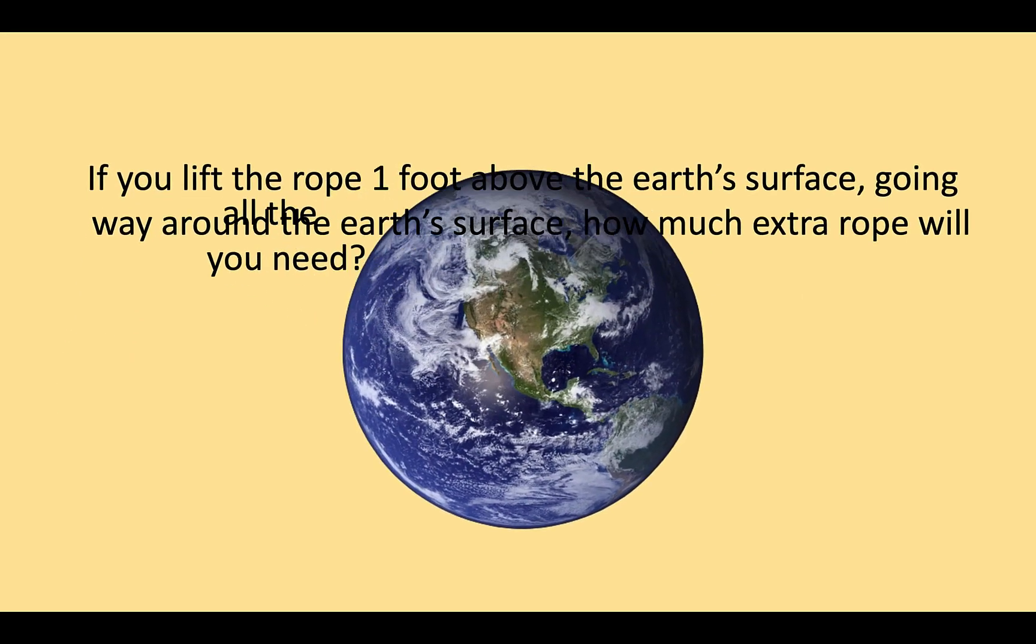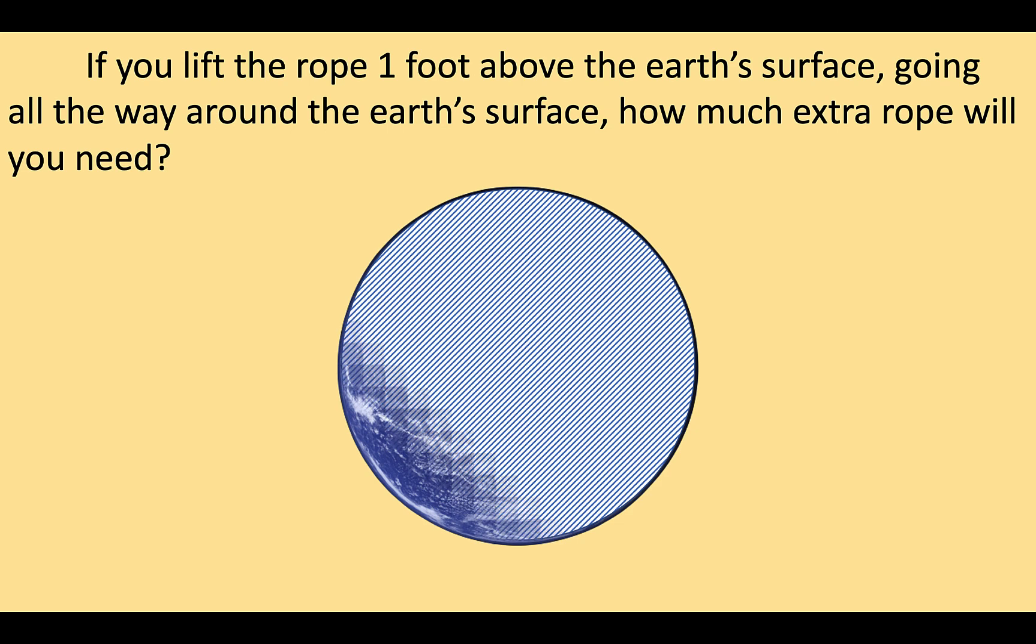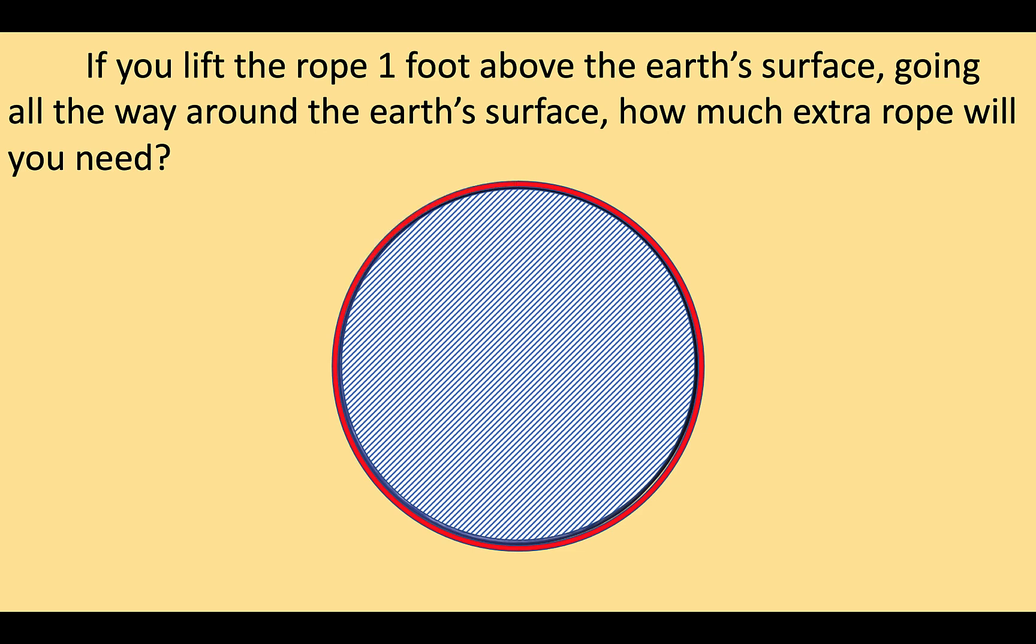Now let's solve this problem together. Let's cut a plane that will cut through the Earth's equator, dividing it into two equal parts. And here is the cross-section when viewed from the North Pole. The circumference of the Earth would be this red circle.